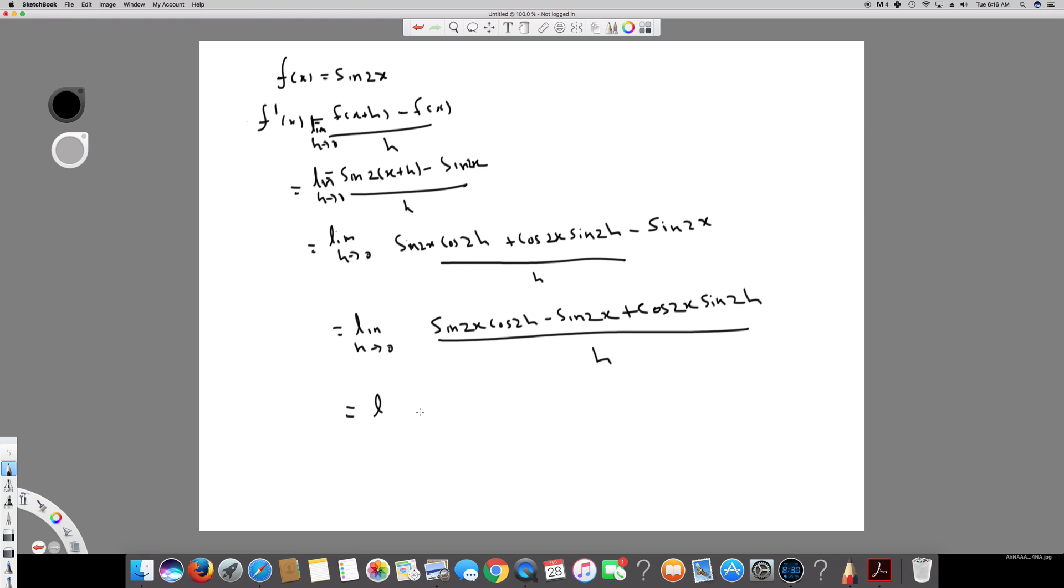So in this case, what I can do is I can take the sine 2x common. So it's gonna be limit h approaches 0, sine 2x common, so it's going to be cos 2h minus 1.